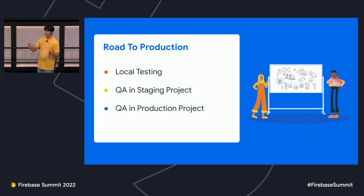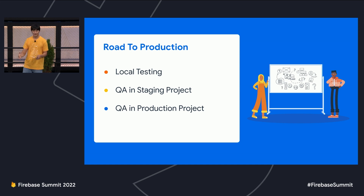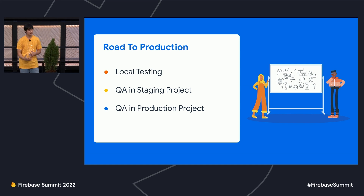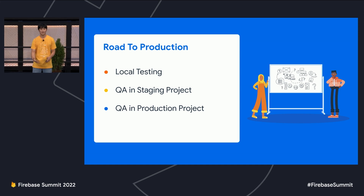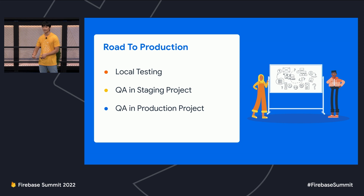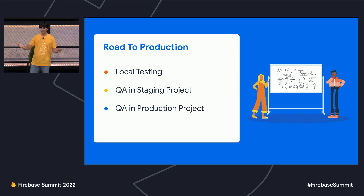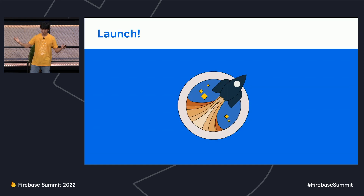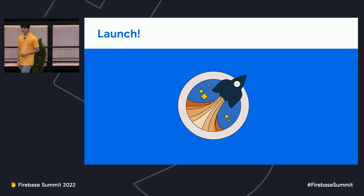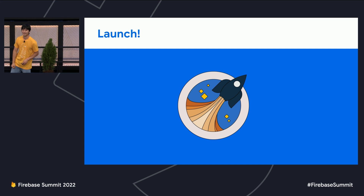So she wrote the function, ran the emulator to test her logic, deployed it to her QA project, did a production launch and QA there. She's happy. Everything's working great. Launch. High fives. She's getting kudos. She's feeling great.